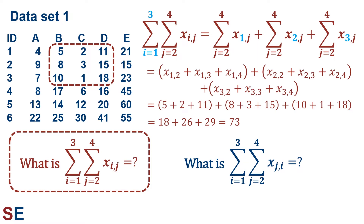It's also useful to visualize what part of the table we're adding up. Our rows, represented by i, go from 1 to 3, and our columns, represented by j, go from 2 to 4. So that's the first three rows and columns 2, 3, and 4 in our table.